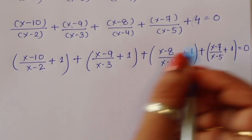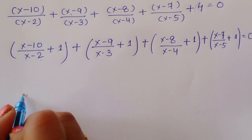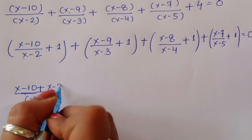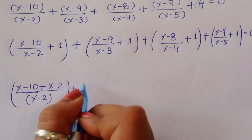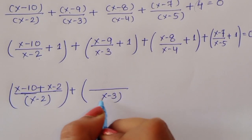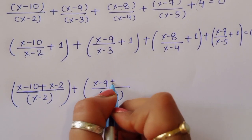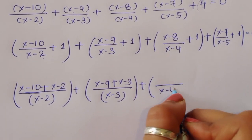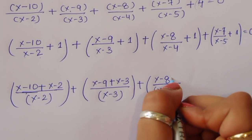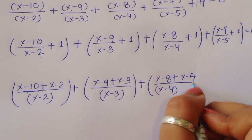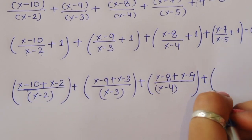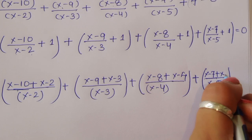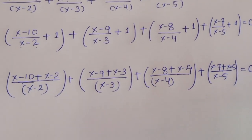Taking LCM within each pair: for the first term, LCM is (x minus 2), giving (x minus 10 plus x minus 2). For the second term, (x minus 3) cancels, giving (x minus 9 plus x minus 3). For the third term, (x minus 4) cancels, giving (x minus 8 plus x minus 4). For the fourth term, we get (x minus 7 plus x minus 5), all equal to 0.